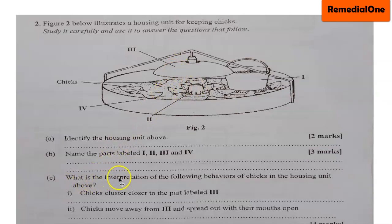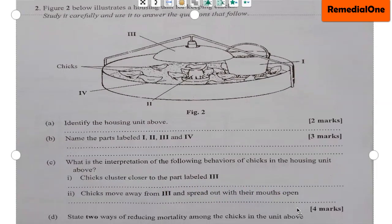Question C: What is the interpretation of the following behaviors of chicks in the housing unit above? Part i: Chicks cluster closer to the part labeled III. Part ii: Chicks move away from III and spread out with their mouths open. Then let's look at the next question.